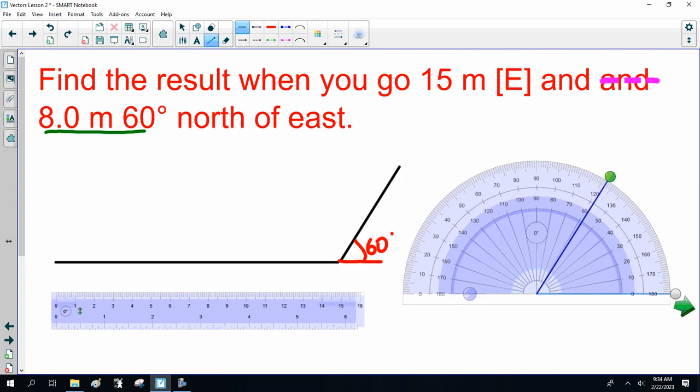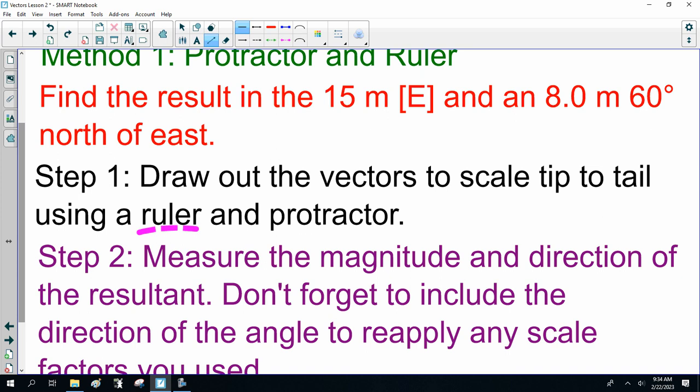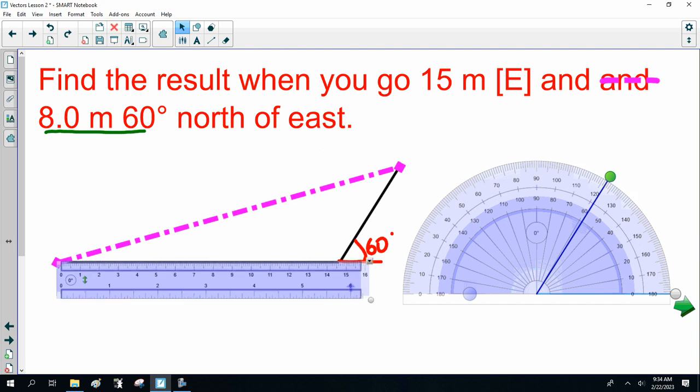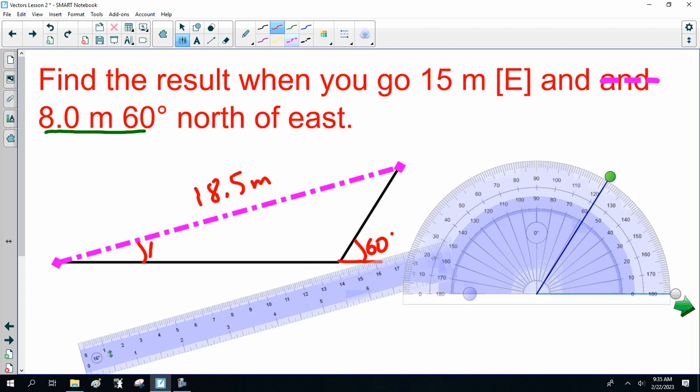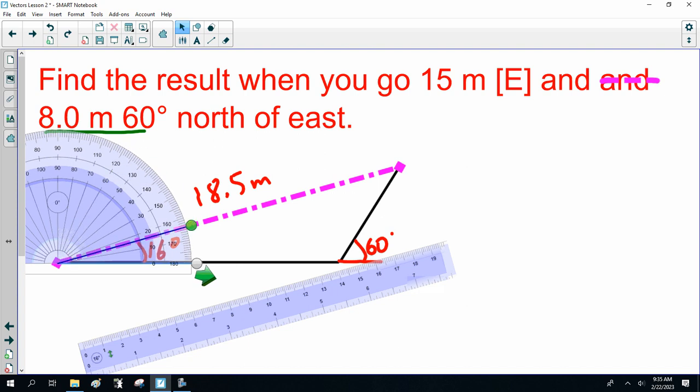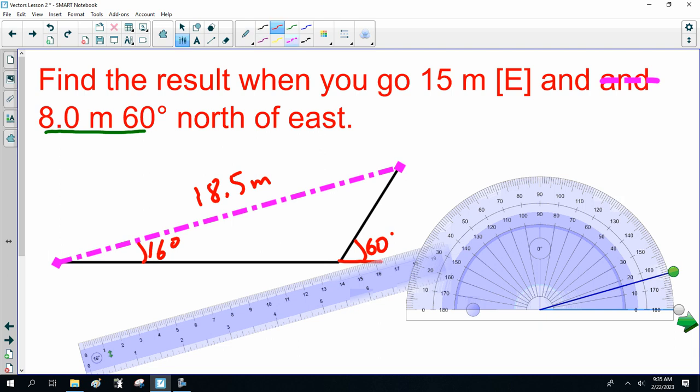Now draw the vectors to scale tip to tail and measure the magnitude and direction of the resultant. The resultant is from here to there. Let's measure that. The calculator says that is 18.5 and the angle says 16 degrees.